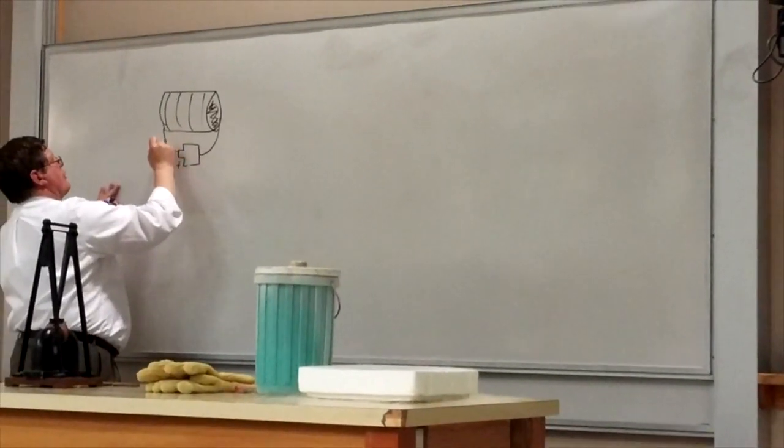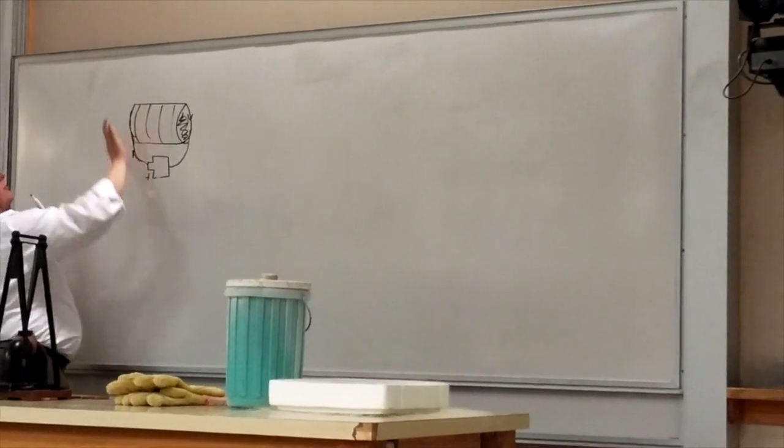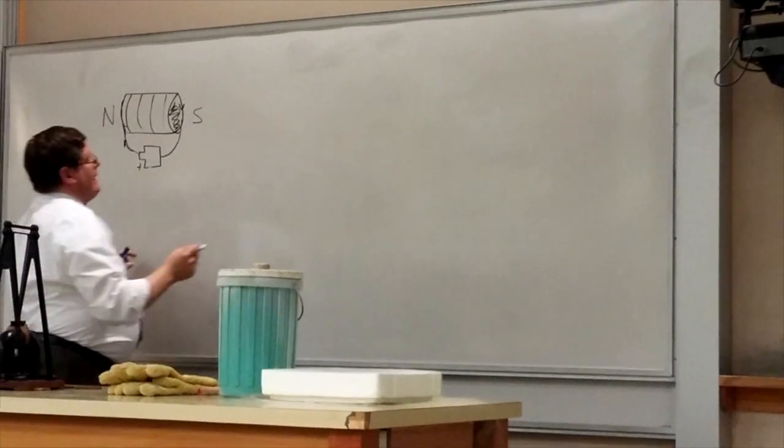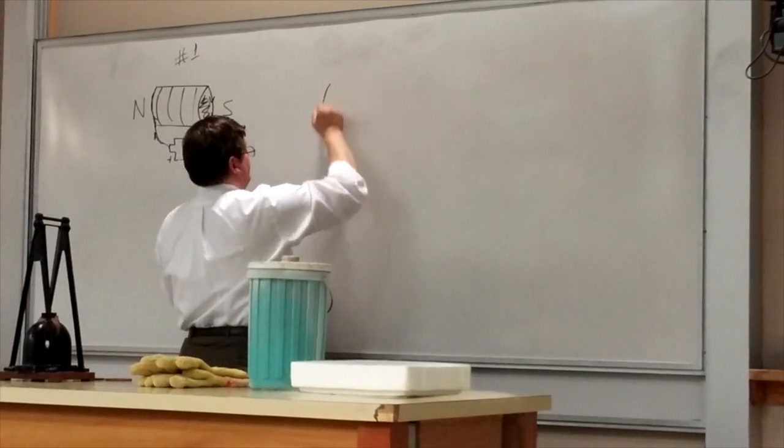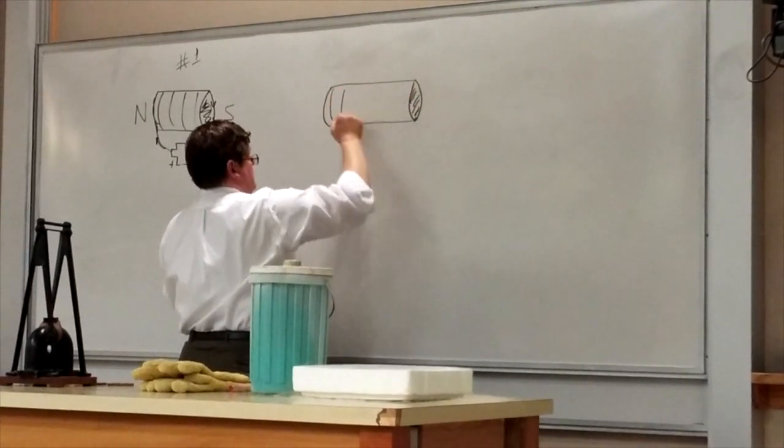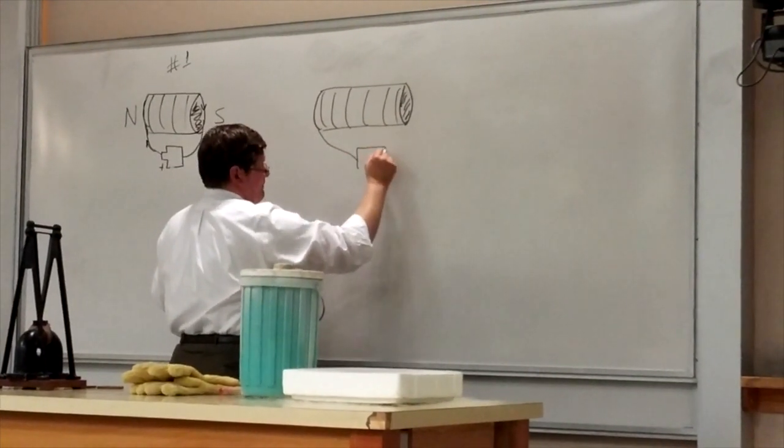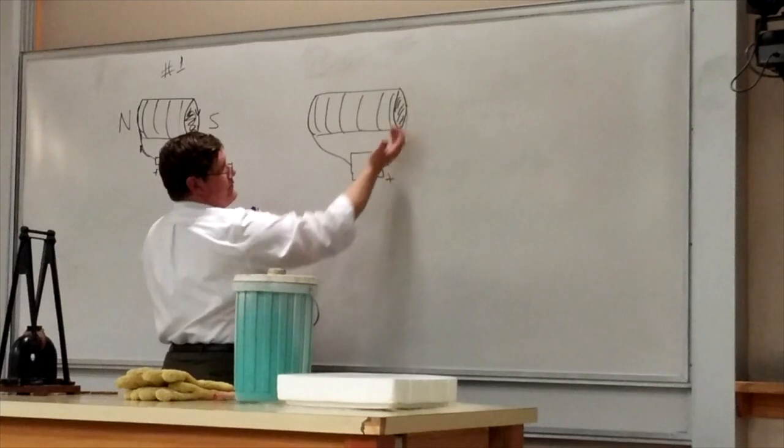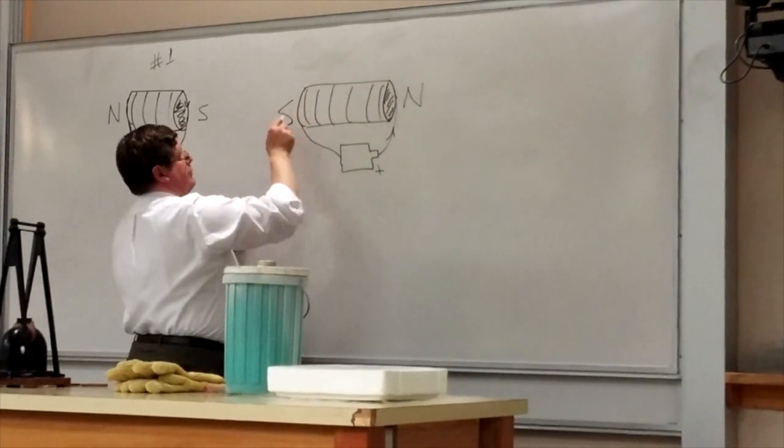Conventional current is going up the front and down the back. That means I got a north pole here and a south pole there, and we call that solenoid number one. Solenoid number two is a little bit longer and hooked up to a battery the other way, so conventional current goes up the back and down the front. That makes a north pole here and a south pole there.